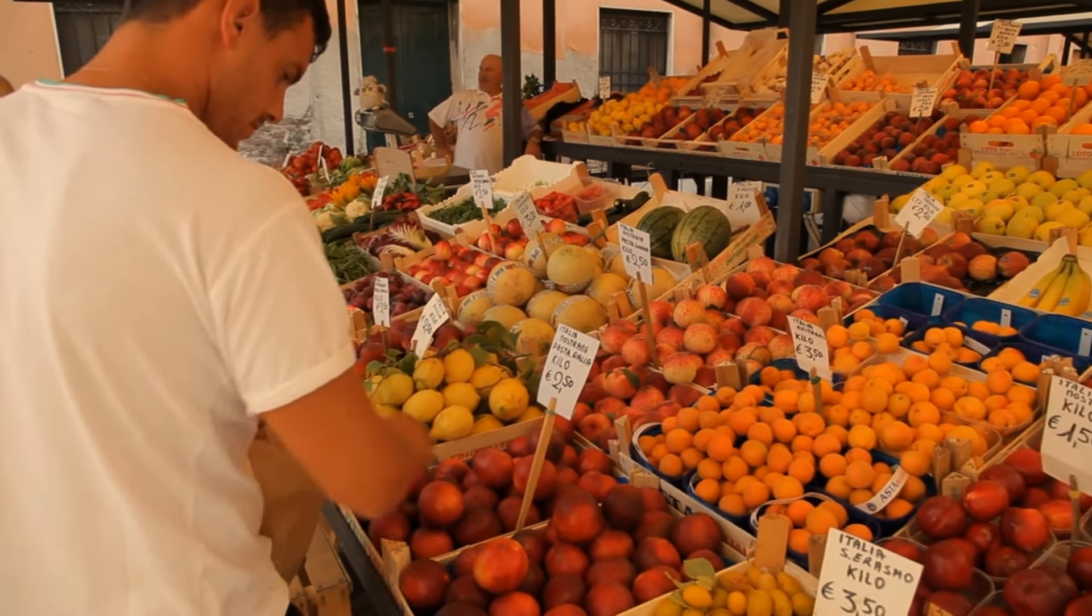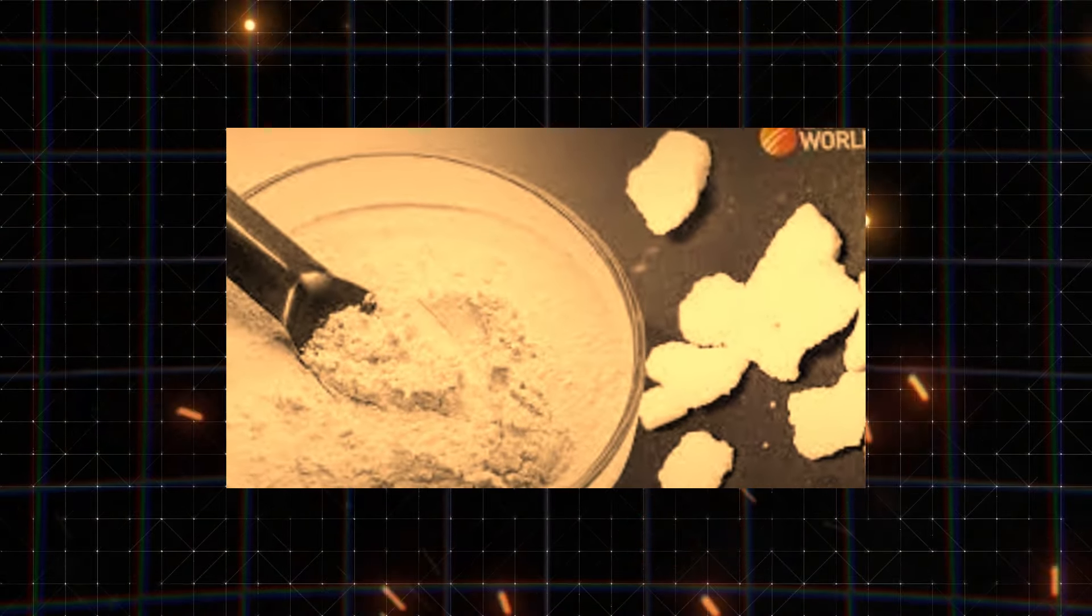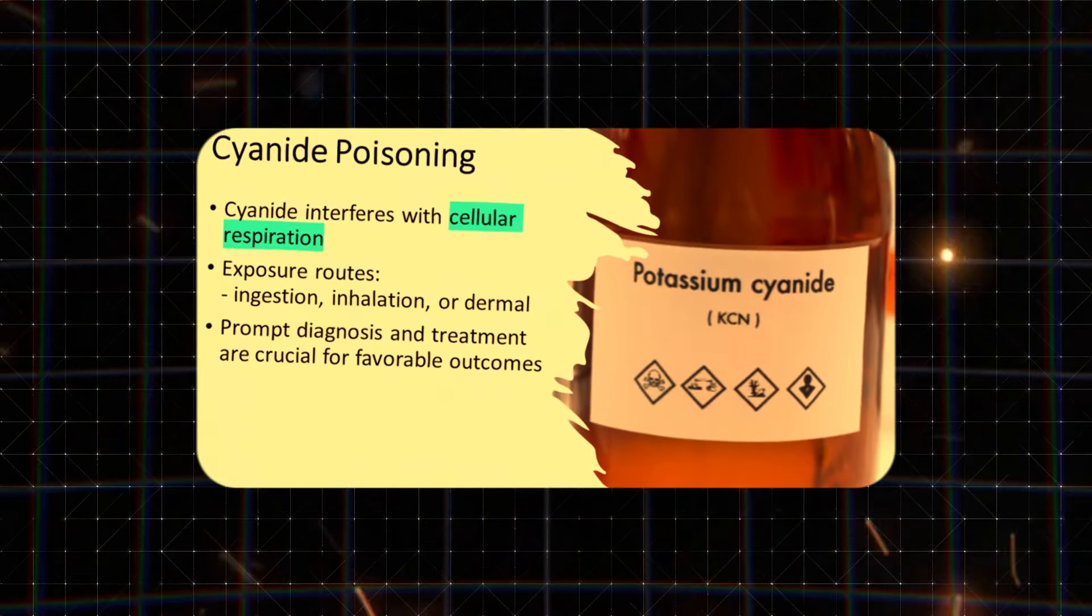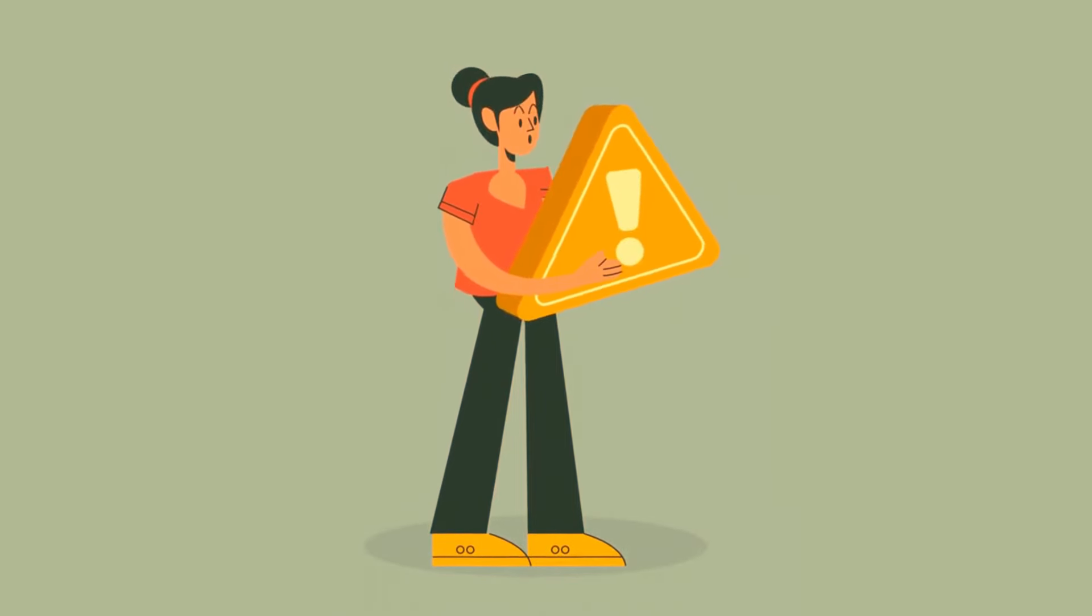But here's the catch: while these foods contain Vitamin B17, they also contain cyanide, a toxic compound. Consuming large amounts of these seeds or pits can lead to cyanide poisoning, which can be fatal. So it's essential to exercise caution and moderation.